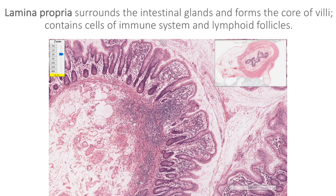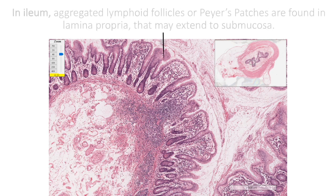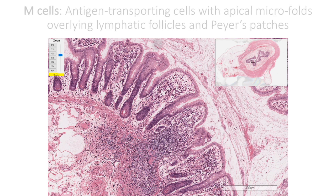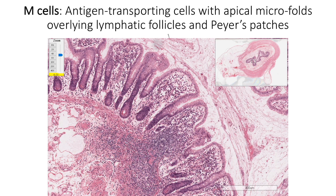Stem cells help in replenishing the other types of cells. Beneath the lining epithelium, the lamina propria surrounds the intestinal glands and forms the core of the villus. The connective tissue of the lamina propria contains fibroblasts, smooth muscle, cells of the immune system, and lymphoid follicles. In the ileum, it contains aggregated lymphoid follicles known as Peyer's patches, which are visible to the naked eye and extend into the underlying submucosal layer. Wherever the lamina propria shows solitary or aggregated lymphoid follicles, the follicle-associated epithelium shows M cells, or microfold cells, which transport and present antigens to underlying macrophages or other immune cells. The lining epithelium here also shows fewer goblet cells and modified enterocytes.